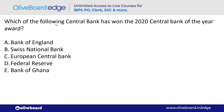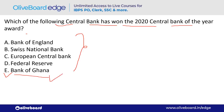Which central bank won the 2020 Central Bank of the Year award? The answer is the Bank of Ghana. Note: RBI is the central bank of India, Federal Reserve is the central bank of the US.